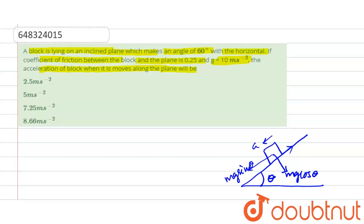In this direction is the frictional force. If the block is moving, as per the question, the block is lying on an inclined plane which makes an angle of 60 degrees, so theta is equal to 60 degrees. The coefficient of friction between the block and the plane is 0.25. Along the plane, the block moves in the direction of mg sin theta and there is the frictional force acting in the opposite direction. This is the force f.